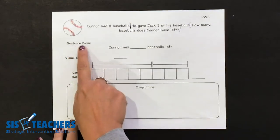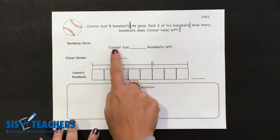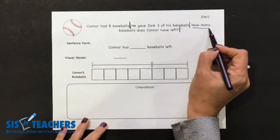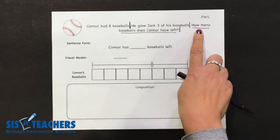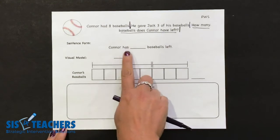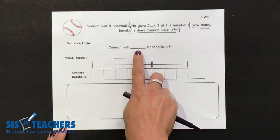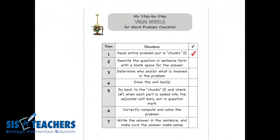We have on our scaffolded part here a sentence form that is filled out for first graders. Throughout the school year, you might start to leave other blanks to see if children are really looking at what the question is asking and getting into the story to see what it's asking us to solve. How many baseballs does Connor have left? So this reads: Connor has ___ baseballs left. The blank means we don't know — that's what we're solving for. We can go back to our checklist and confirm we've done this step correctly by rewriting it.